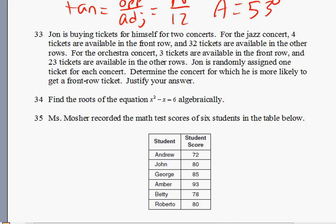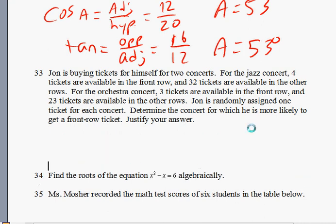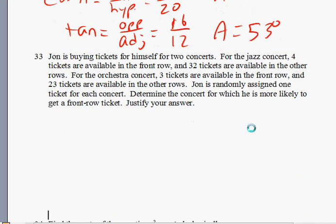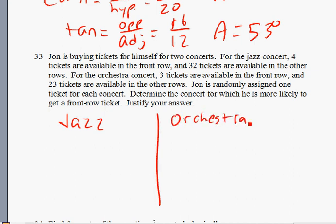Next question, 33. What do we have here? We have looking to buy tickets, front row seats and back row seats, and looking for the probability question. Looking for the probability of getting available front row seats. I'll give you a few seconds to read this over. You can also pause to read the question. There we go. There's two concerts he can go to. John can go to the jazz concert, or he can go to the orchestra concert.